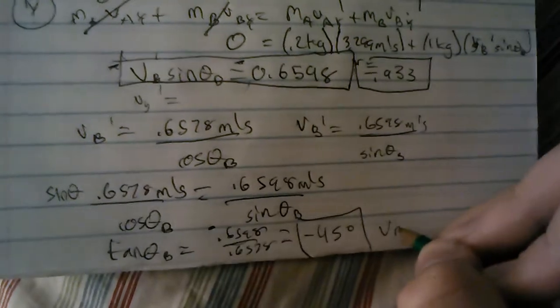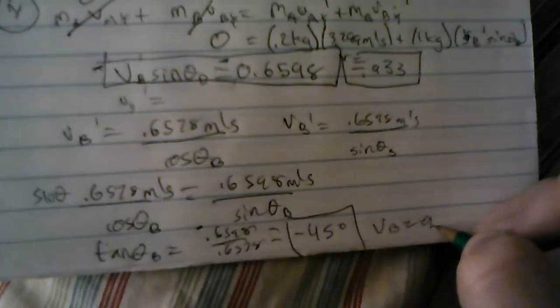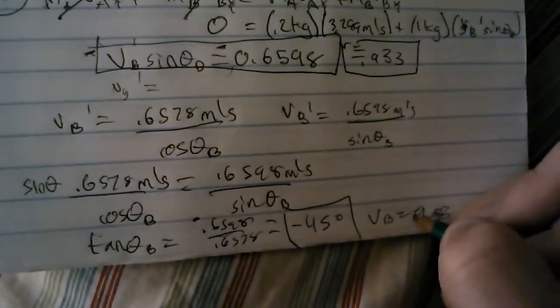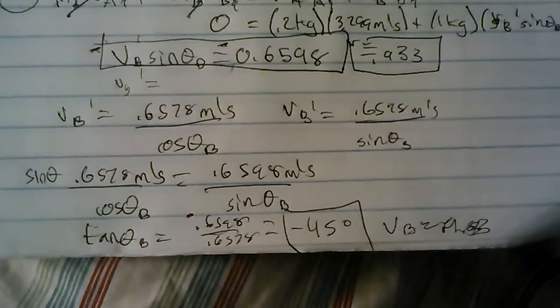So negative 9, or not negative 9, just 0.933, and that is how you do a billiard ball problem.